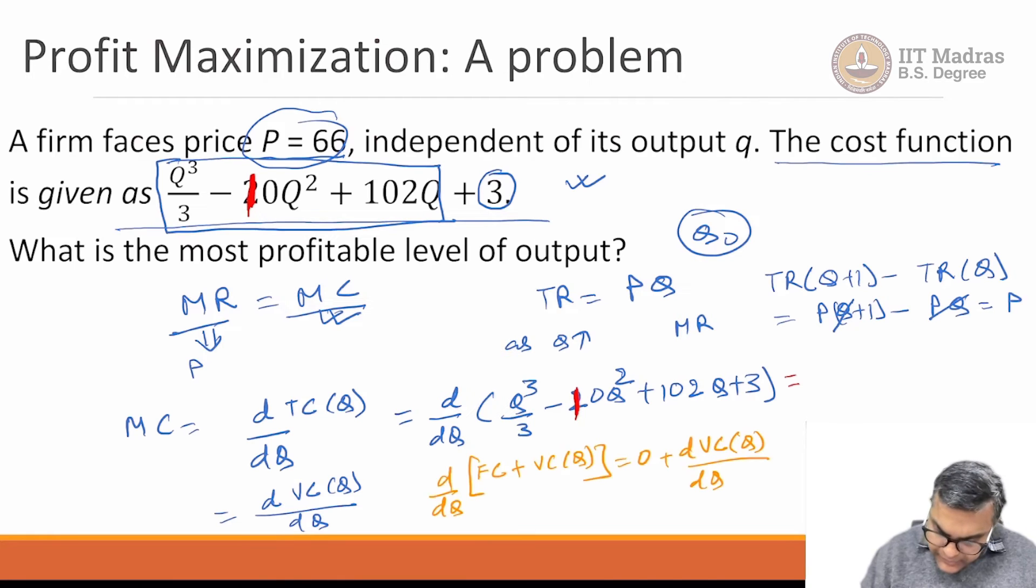Here we get, this is going to be 3q² divided by 3, 20q plus 102. This 3, 3 will get cancelled. Basically you will get q² minus 20q plus 102.